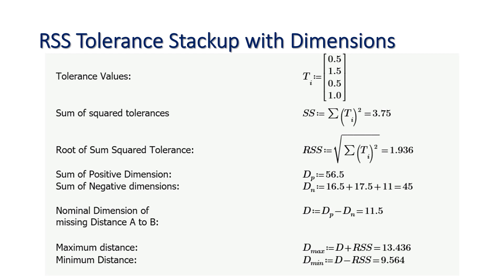The missing distance from A to B is nothing but D, the nominal distance 11.5, plus the root of sum squared tolerances. That is equal to 13.436.